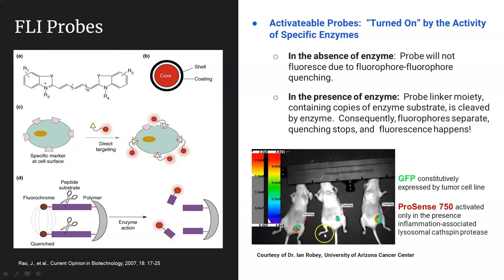Here is a simple example: ectopic subcutaneous tumors have been transduced to express GFP constitutively. Using an activatable probe, ProSense 750, one can detect the host inflammatory response to these tumors by monitoring the lysosomal cathepsin protease concentration around those ectopic tumors. The signal from ProSense 750 can be captured and added in a layered fashion to the GFP signal, showing via co-registration the co-localization of the host inflammatory response to the presence of the tumor.